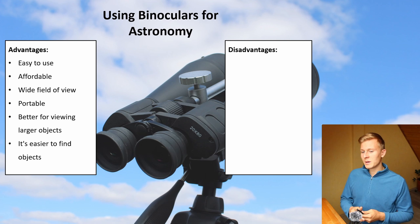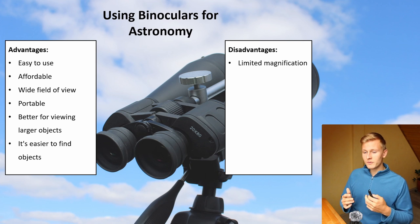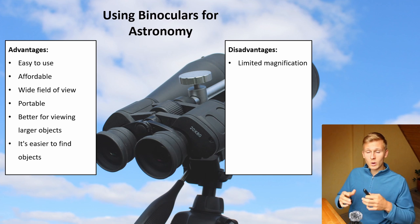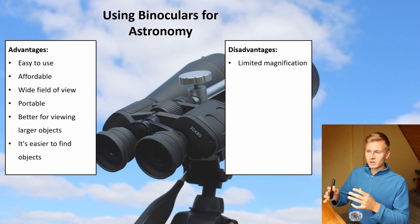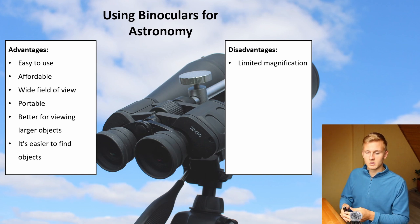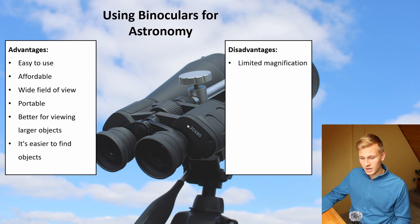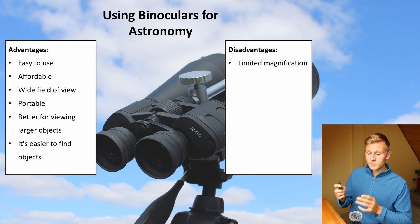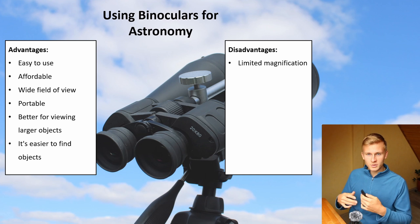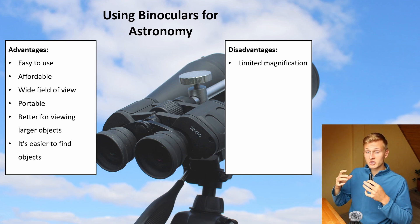But there are not only advantages — there are also disadvantages when using binoculars for astronomy. The very first disadvantage is definitely limited magnification. You will have a wide field of view, which is not ideal for looking at very small objects including planets. My 20x80 binoculars have 20 times magnification, which is quite much for a binocular but not compared to a telescope. You can see the moons of Jupiter, for example, but you will not see a lot of structures on the planet.